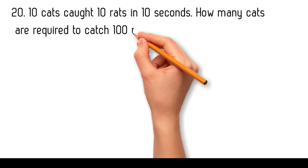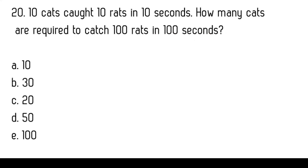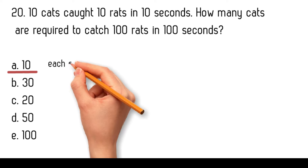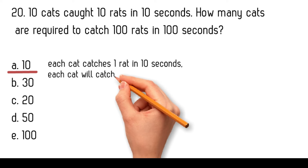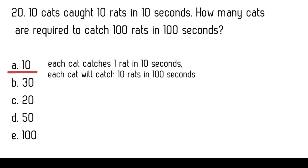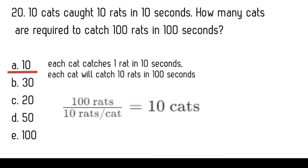Ten cats caught ten rats in ten seconds. How many cats are required to catch one hundred rats in one hundred seconds? Options: ten, thirty, twenty, fifty, one hundred. Each cat catches one rat in ten seconds. In one hundred seconds, each cat will catch ten rats, since one hundred seconds is ten times longer than ten seconds. Therefore, to catch one hundred rats in one hundred seconds, we need one hundred rats divided by ten rats per cat, which equals ten cats.